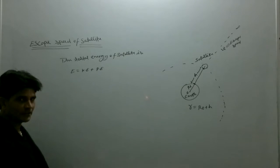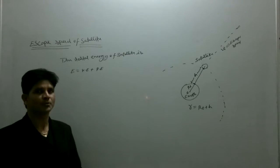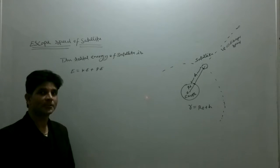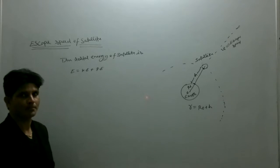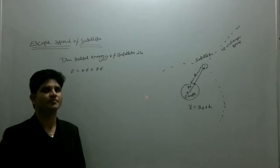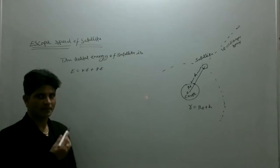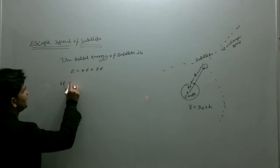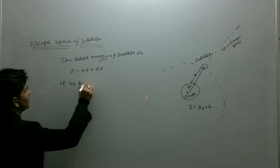We already know that a satellite possesses both kinetic energy due to its speed in its orbit and potential energy due to its height from the earth's surface. So it has both types of energy. The sum of these kinetic and potential energies equals the total energy of satellite.